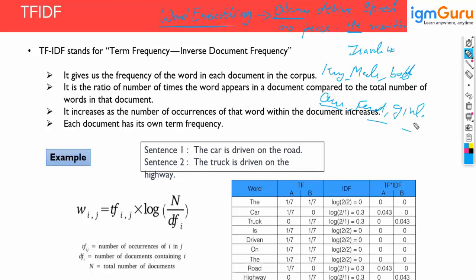This is the main concept in generative AI, because generative AI models are trained on very huge data. For example, ChatGPT is trained on almost all the data available over the internet.